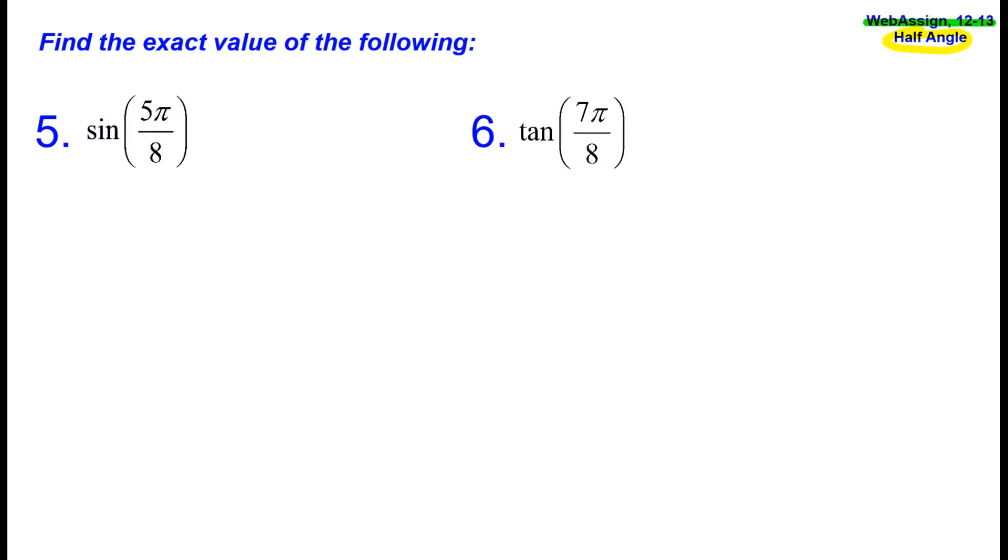Find the exact value of the following. Sine of 5π over 8. Unfortunately, 5π over 8 is not in our unit circle. It's not one of the angles on our unit circle. So we're going to have to figure out how 5π over 8 might be related to another one of the angles that we know something about. And I think this one's pretty easy to figure this out. If you look at 5π over 8, that's really one half of the angle 5π over 4.